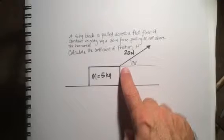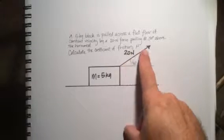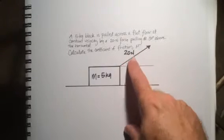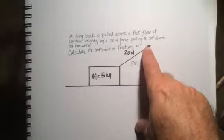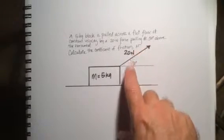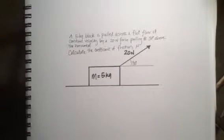Now, the 20 Newton force is pulling at a 30 degree angle above the horizontal. So, 30 degrees above flat, we're applying a 20 Newton force. Calculate the coefficient of friction, mu.